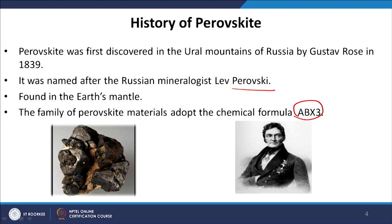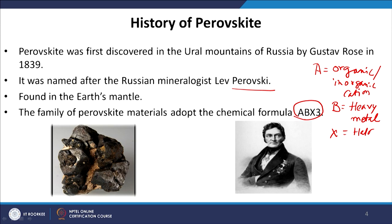All those crystal structures or materials which have a crystal structure of ABX3 are called perovskite crystal structure. Here A is an organic or inorganic cation, B is a heavy metal, and X is a halogen like chlorine, bromine, or iodine. When you have an organic compound as the A cation along with the heavy metal and halogen, we have an organic-inorganic hybrid perovskite. When you have an inorganic cation as A, we have an all-inorganic perovskite.